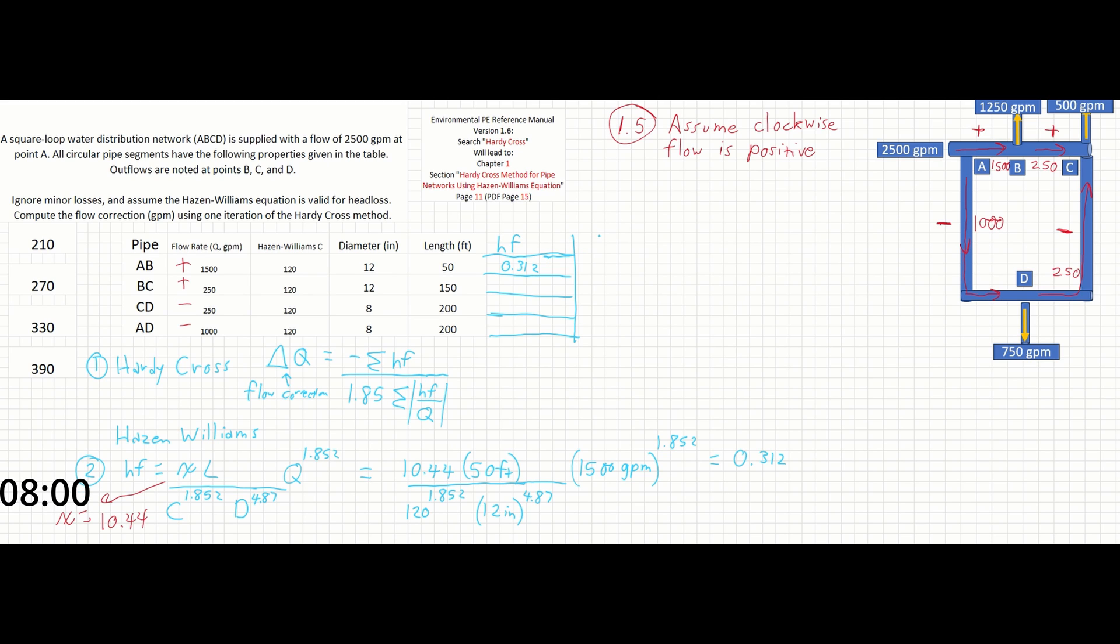Our next term that we can add to this table will just be the head loss divided by Q, since that's the other term that we need to figure out the Hardy Cross flow correction value. So HF over Q equals 0.312 over 1500 gallons per minute, and that is going to come out to 0.000208.